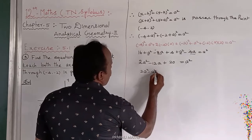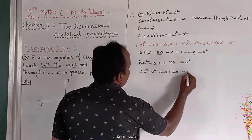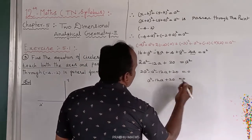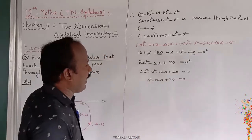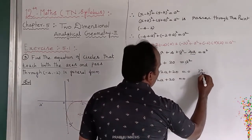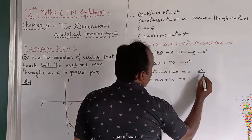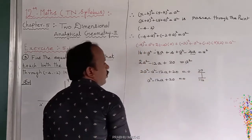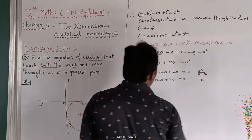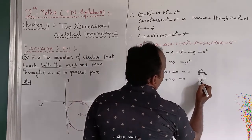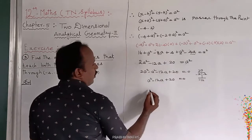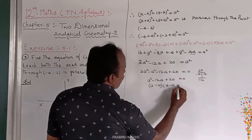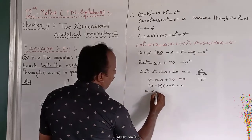The quadratic equation is a squared minus 12a plus 20 equals 0. We need two numbers whose product is 20 and sum is minus 12: those are minus 10 and minus 2. So we factor as a minus 10 times a minus 2 equals 0.